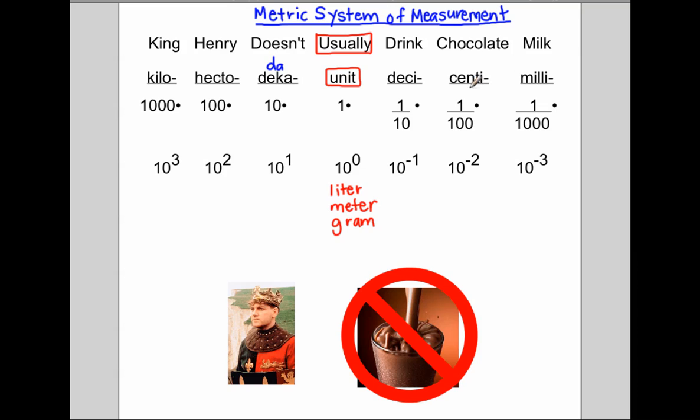Centi is a prefix that means one-hundredth. That's where we get percent from. So it's one-hundredth. And then milli is one-thousandth of it.